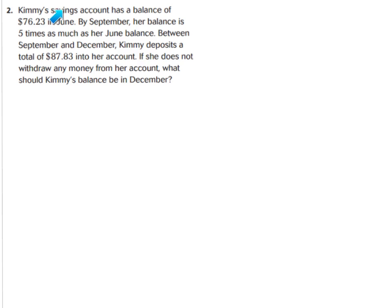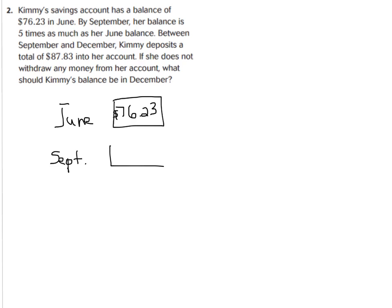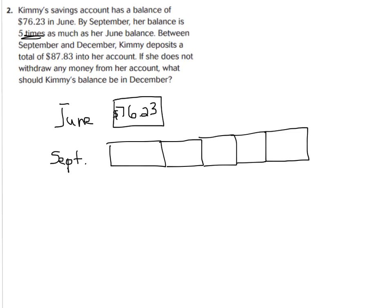Let's stop and think about what we know. Kimmy's savings account has a balance of $76.23 in June. In your GoMath book, make a box and label it June, and put $76.23 inside. By September, her balance is five times as much as her June balance. We should make five boxes for September because it's five times the amount, and put the value of June — $76.23 — in every one of those boxes.